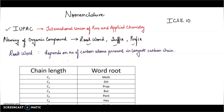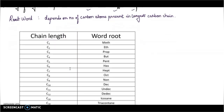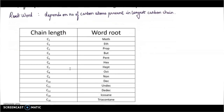Now we'll start with this system. I'll tell you how to name. The first part is the root word — it depends on the number of carbon atoms present in the longest carbon chain. You have to select the longest carbon chain.